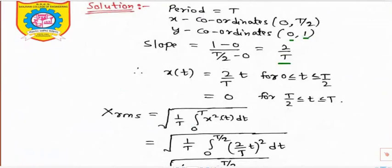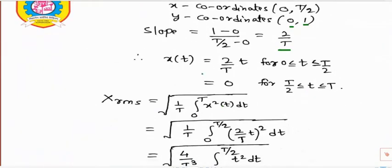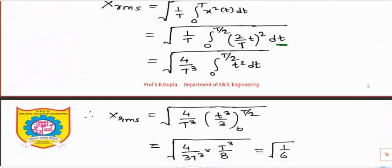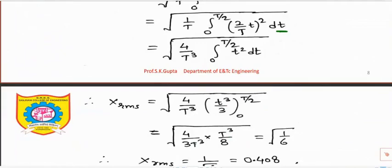The integration from T/2 to T will be 0 since x(t) = 0 there. Substituting x(t) = (2/T) × t in the interval 0 to T/2: (2/T) is a constant with respect to t, so take 2/T squared = 4/T² outside the integration. Integrating t² gives t³/3. Putting in the upper and lower limits, the T³ terms cancel, and the answer comes out as √(1/3) — wait, resolving: the RMS value is √(1/3) which equals approximately 0.408.